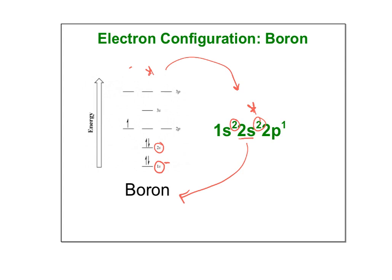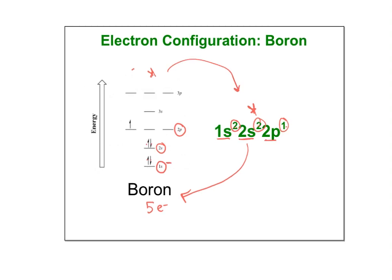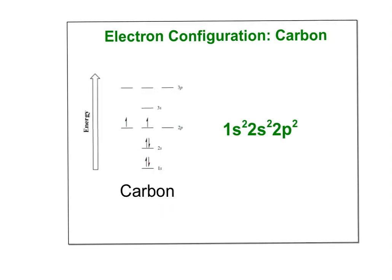On the 1s sub-level are two electrons; on the 2s sub-level are two electrons; on the 2p sub-level is one electron. That is the electron configuration for boron. For carbon it's 1s² 2s² 2p² — I see two arrows in the 2p, so the exponent is 2. That's how we read the electron configuration: 1s² 2s² 2p² — you just read it all together.